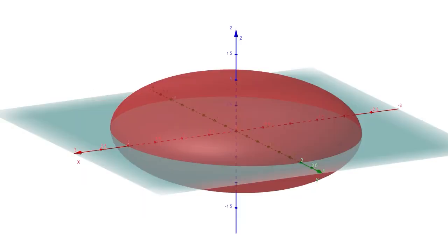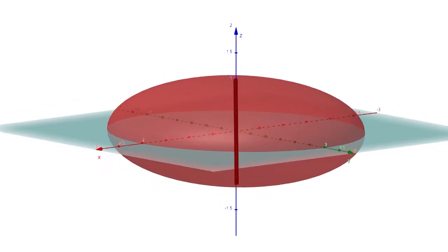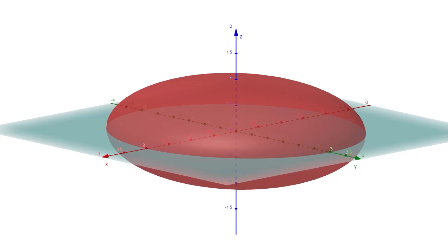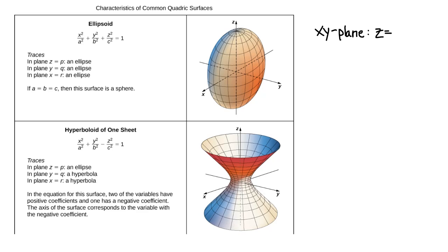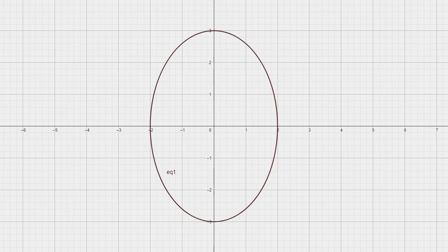Here we see an ellipsoid in 3D space centered at the origin (0, 0, 0). On the x-axis it goes from −2 to +2, on the y-axis from −3 to +3, and on the z-axis from −1 to +1. If we slice through the middle with the xy plane where z = 0, we get the trace. We just plug z = 0 into our equation. Geometrically we are slicing through the ellipse with the xy plane. Whether we slice through the xy, yz, or xz plane, we always get an ellipse.